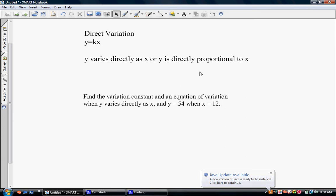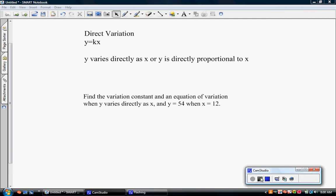The problems will look similar to this. Find the variation constant – in other words, we're trying to find out what k is in this particular equation – and an equation of variation when y varies directly as x and y equals 54 when x equals 12. We have to start these problems by determining first which equation that we'll use. If it's a direct variation problem, we will always use this particular equation.